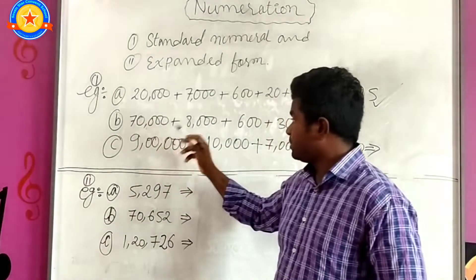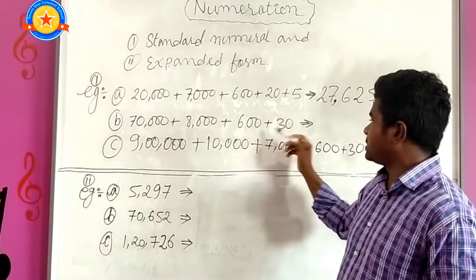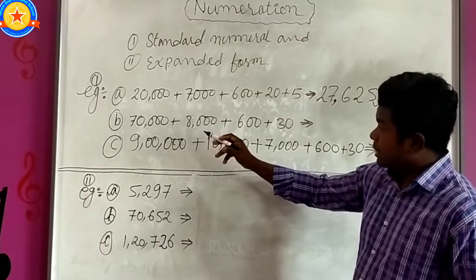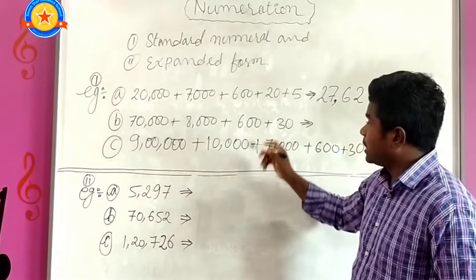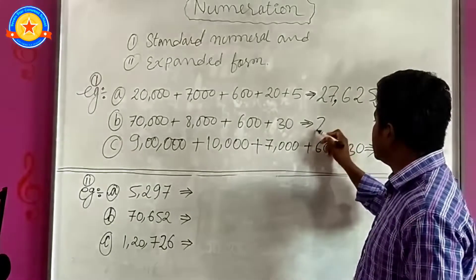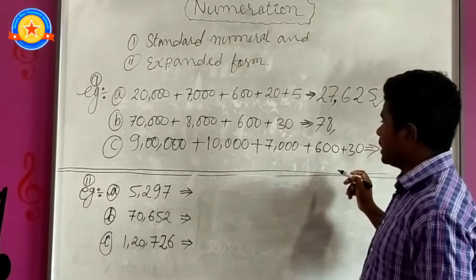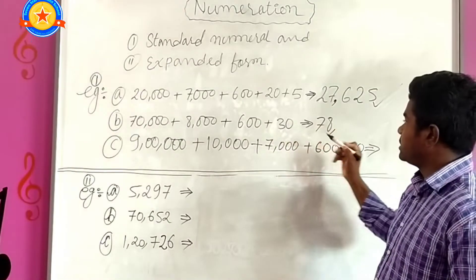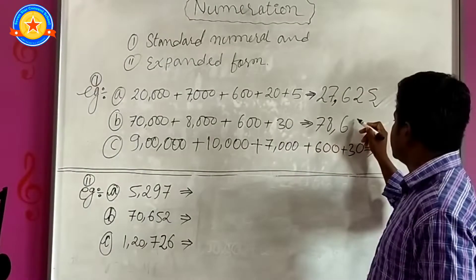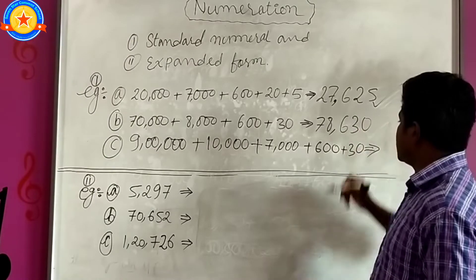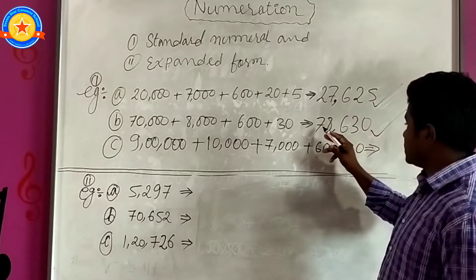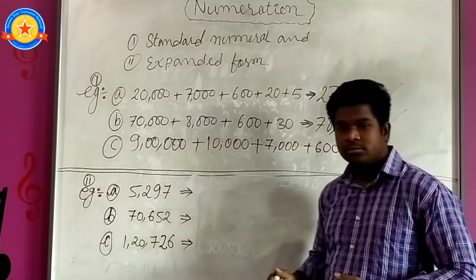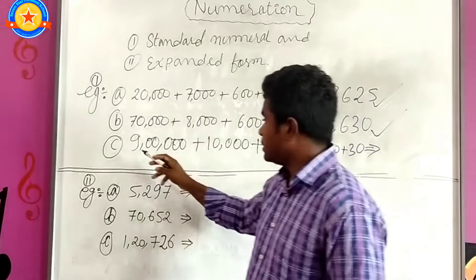Number B: 70,000 plus 8,000 plus 600 plus 30. Let's write the answer. 70,000 plus 8,000 will become 78,000. Again we have 600 plus 30. So 600 plus 30, this is the answer: 78,630. Now let's do the last one.